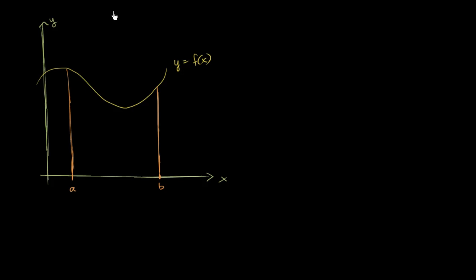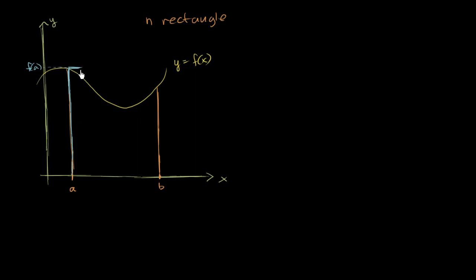And I'm going to use n rectangles, using the function evaluated at the left boundary of the rectangle to determine its height. So for example, this will be rectangle 1. I'm going to evaluate what f of a is — this right over here is f of a — and then use that as the height of my first rectangle. So rectangle number 1 looks just like that.